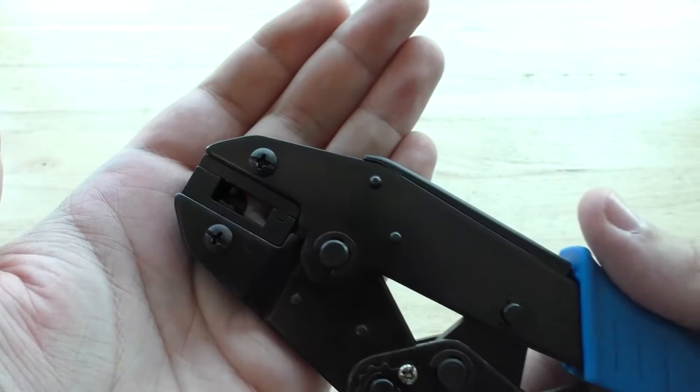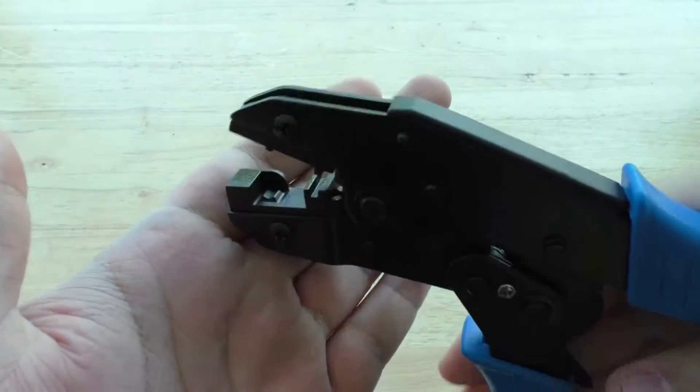The first thing you'll notice is the blue impact plastic handles followed by the unique shape of the crimping die.